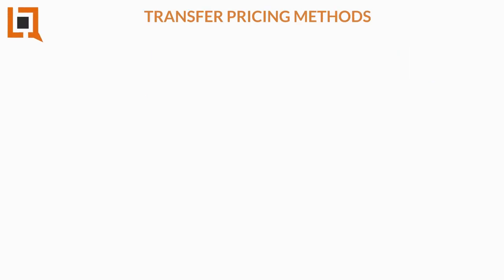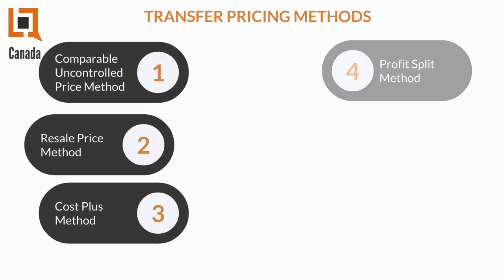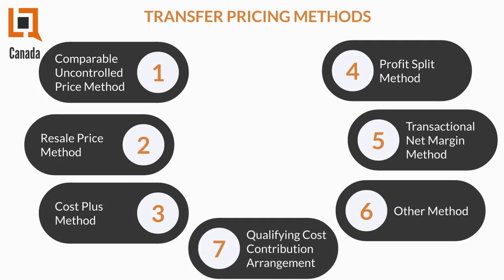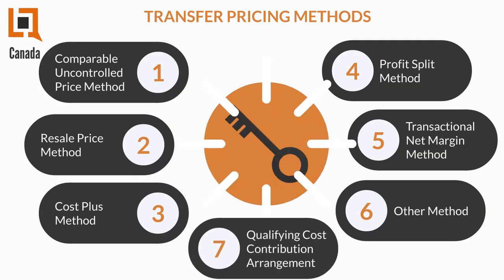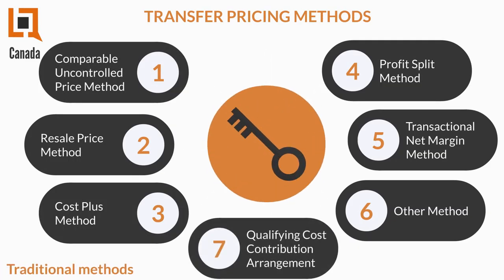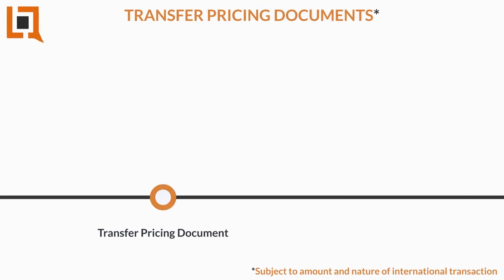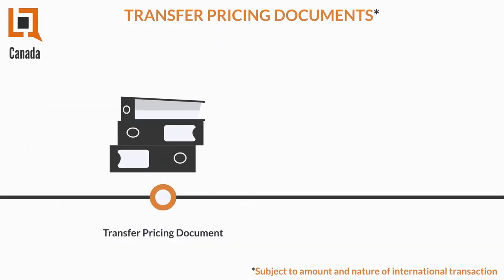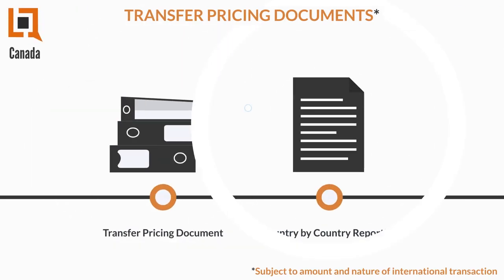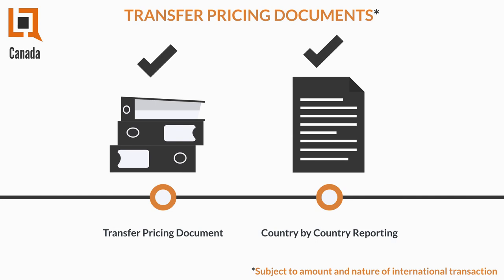Tax authorities have prescribed seven methods to be used by companies to show that a transaction is at arm's length price. Generally, companies entering into related party transactions are required by the authorities to prepare different types of transfer pricing documents.